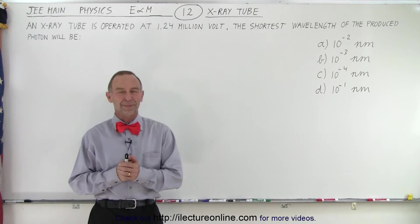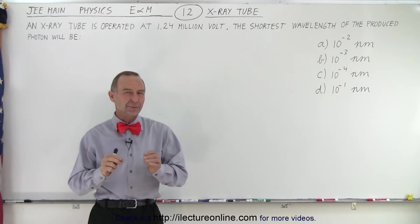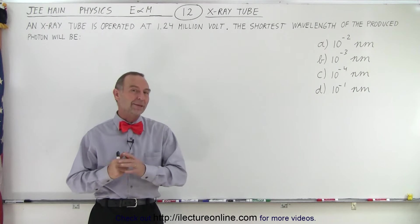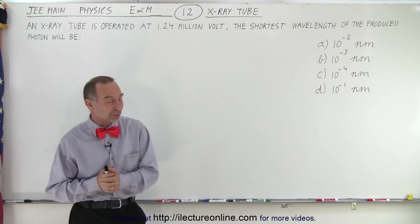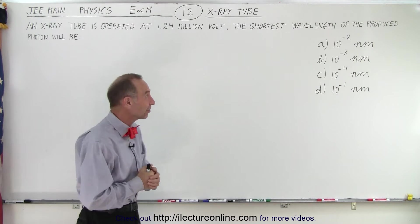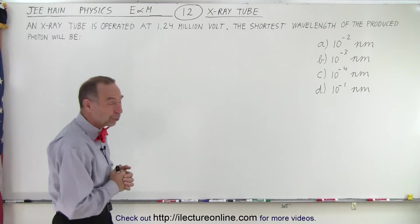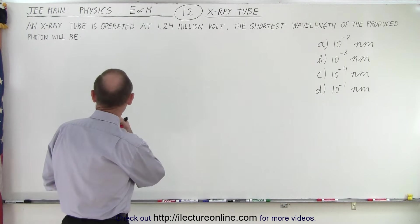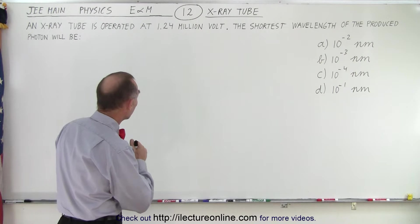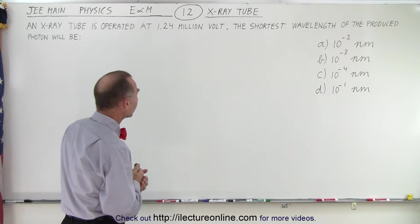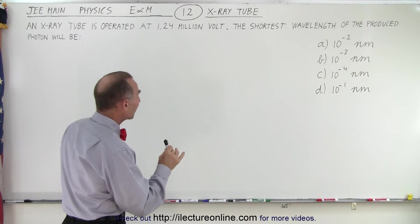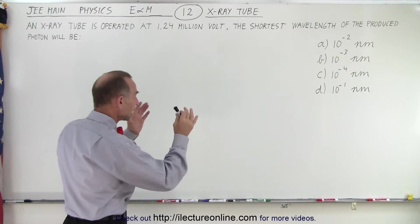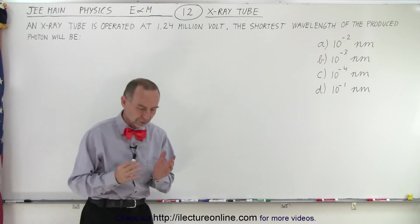Welcome to ElectroOnline. Here's a fun problem and we're going to have to work through some mathematics and arithmetic to get to the answer. It deals with X-ray tubes and they tell us that an X-ray tube is operated at 1.24 million volts. The shortest wavelength of the produced photon will be — and they give us four possible answers.